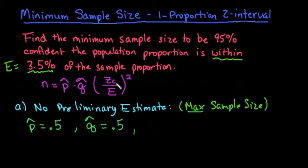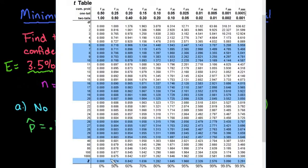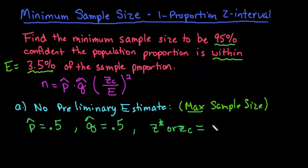Our zc we would find from our table. It could be z star or zc, whichever one your textbook uses. They both are critical values for this specific level of confidence. We would look at 95% confidence, and then we would pull up our table. For this, we would look for 95% confidence, and we see that it's 1.96. This is the most often used. So we would say zc is 1.96.